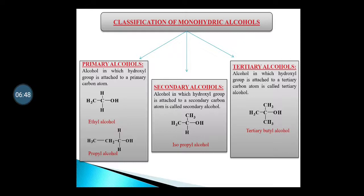Now we talk about tertiary alcohols. A tertiary alcohol is one in which the hydroxyl group is attached to a tertiary carbon atom. A tertiary carbon is a carbon that has three carbon atoms directly attached to it. For example, in tertiary butyl alcohol, the carbon bearing the OH group has three carbons directly attached to it. This is a tertiary alcohol. You must know the distinction between primary, secondary and tertiary alcohols — it is very important.